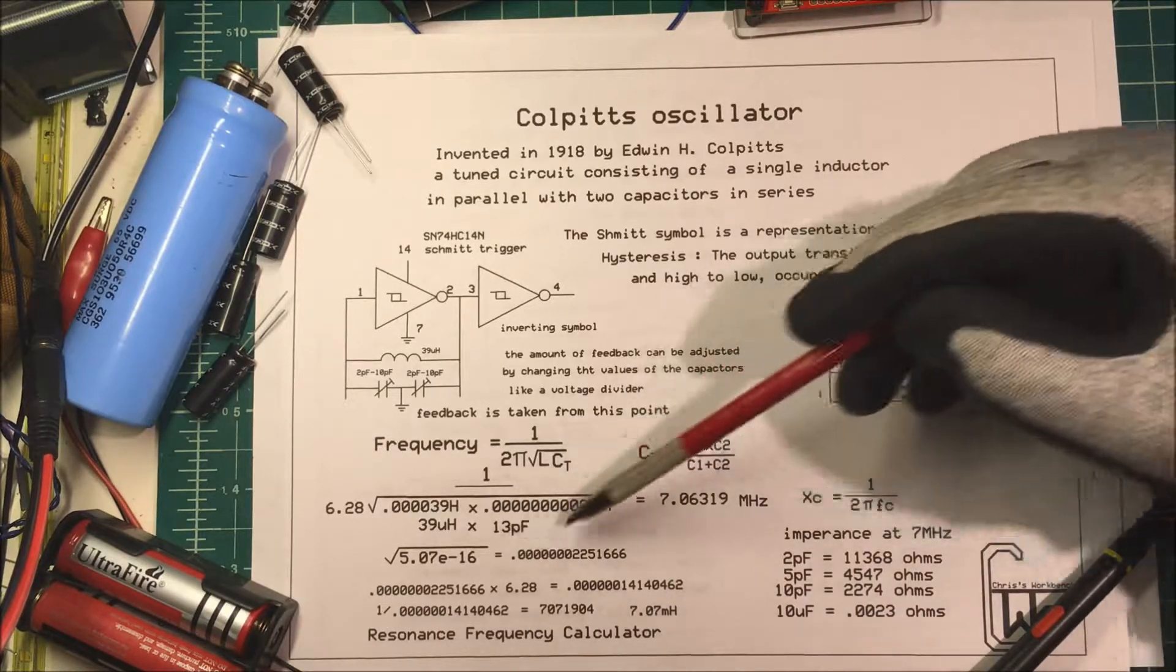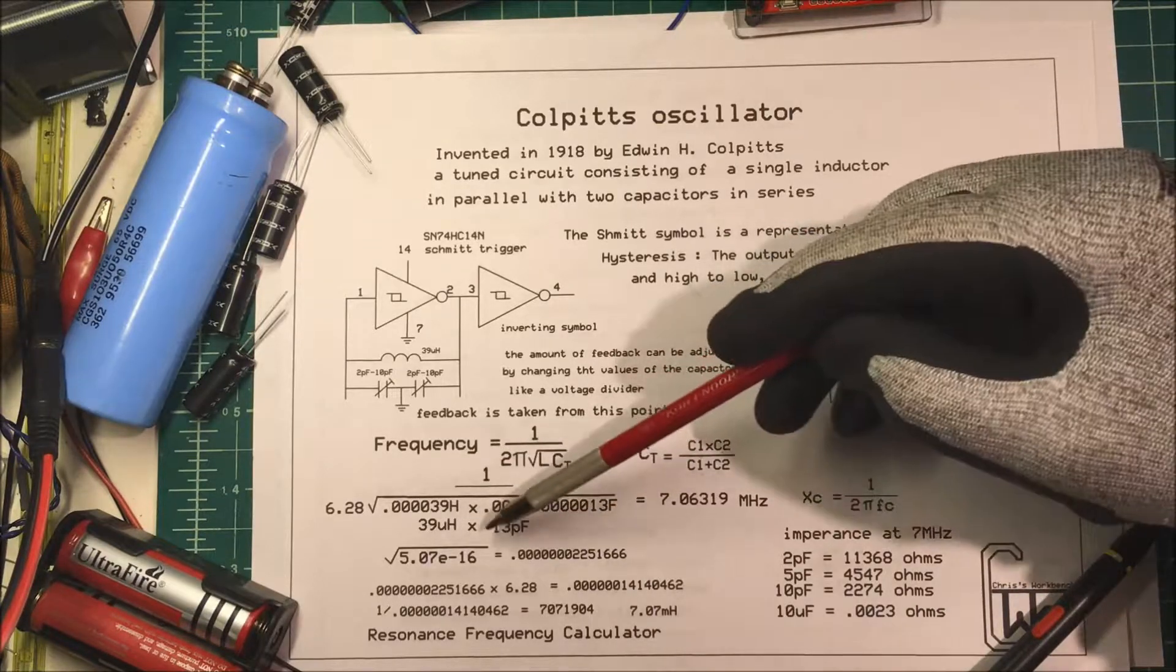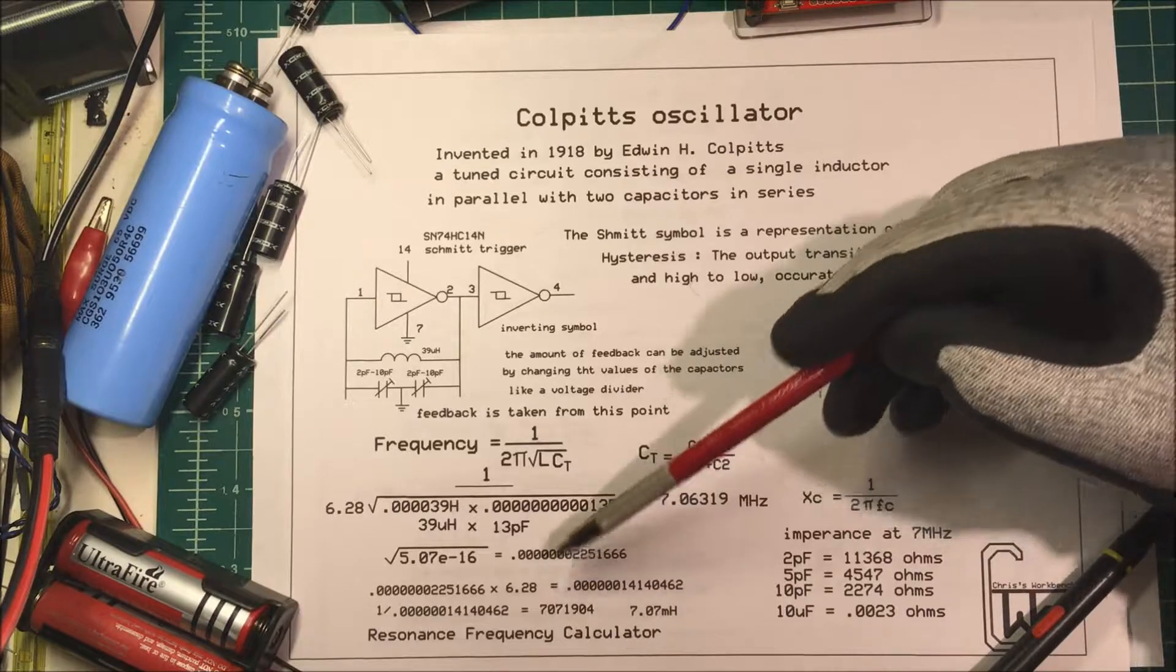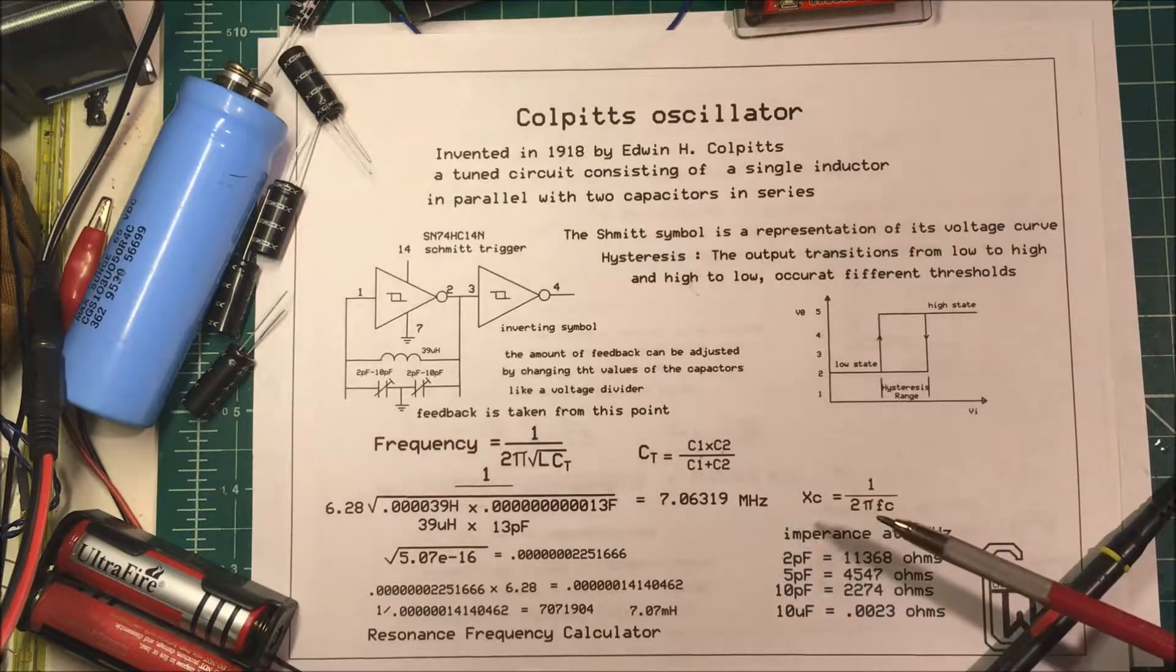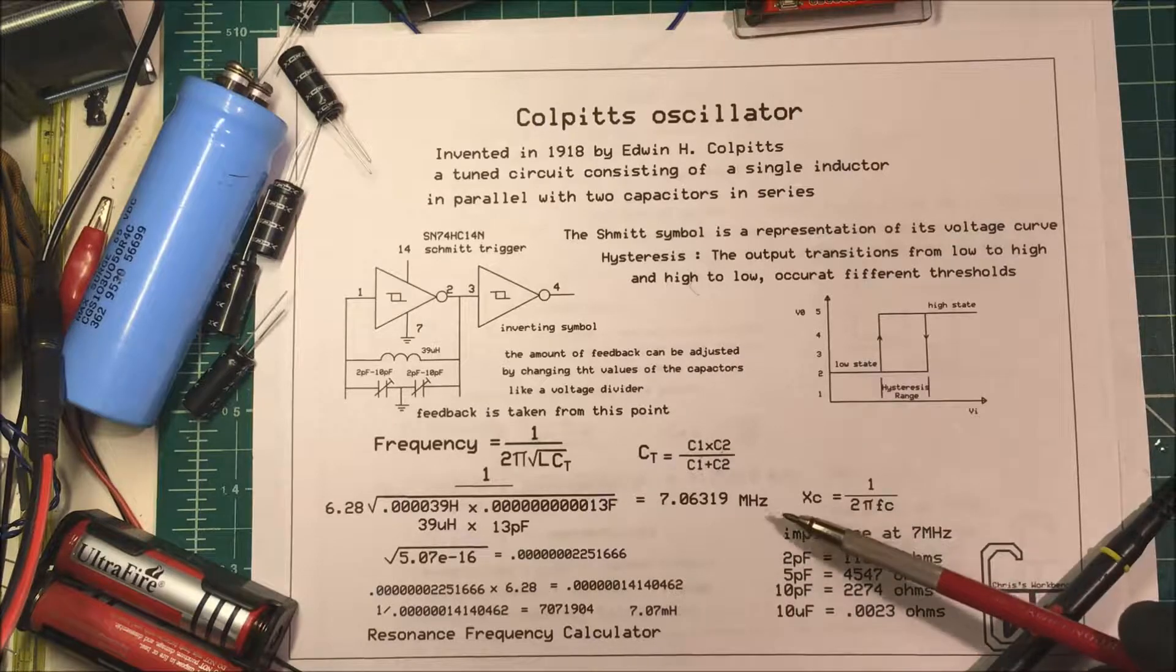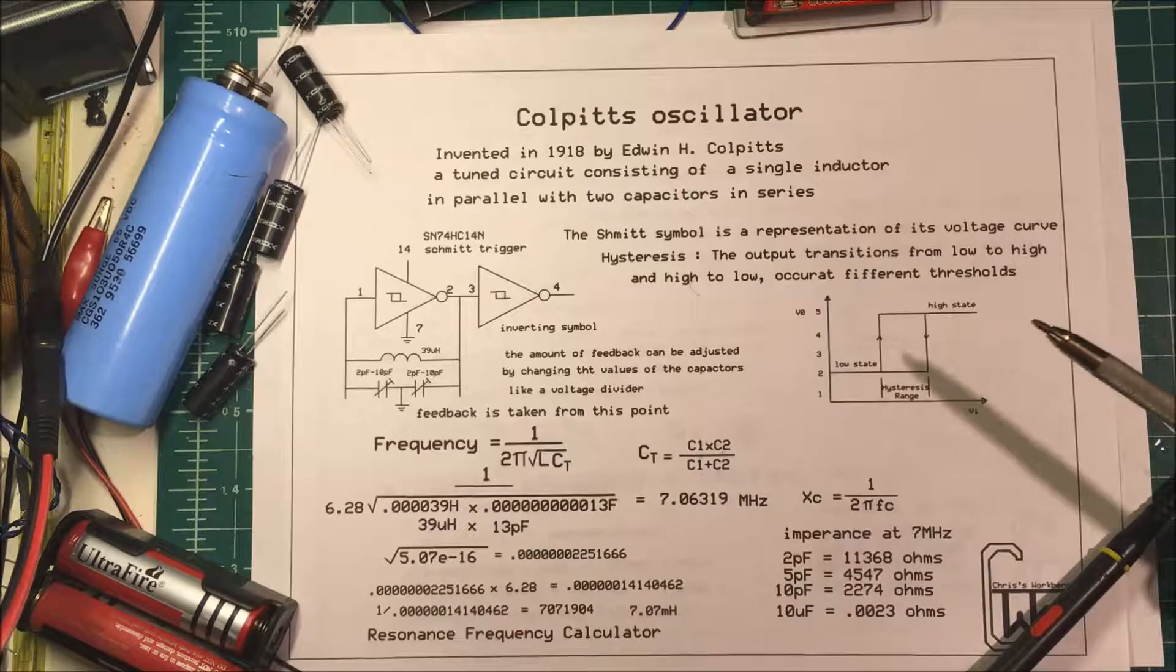Now we can put some numbers into this formula here and calculate that on your calculator to define what your hertz is. I want to have 7 megahertz and I know at 7 megahertz these two capacitors are going to be a voltage divider.